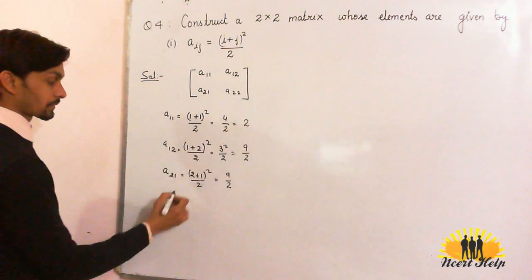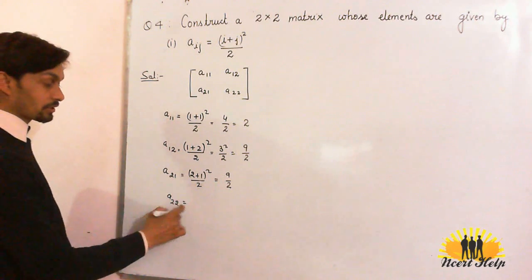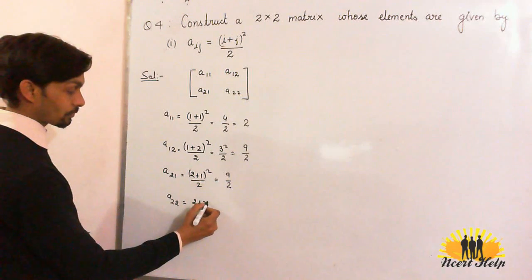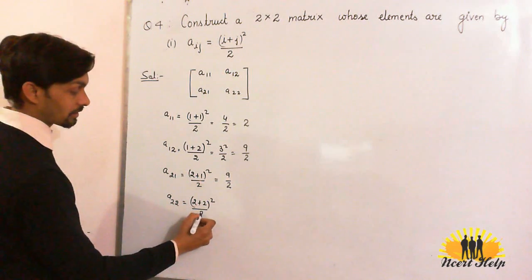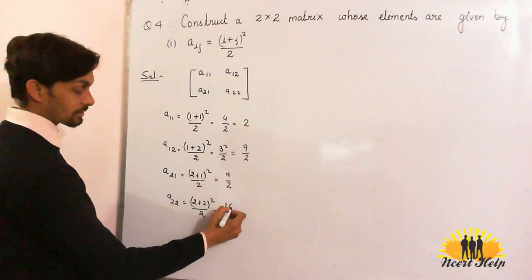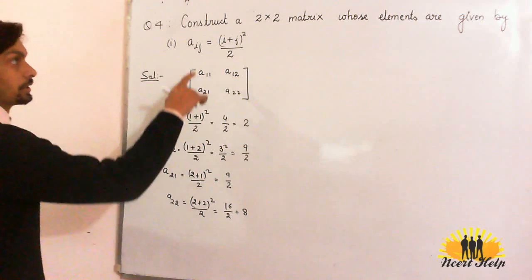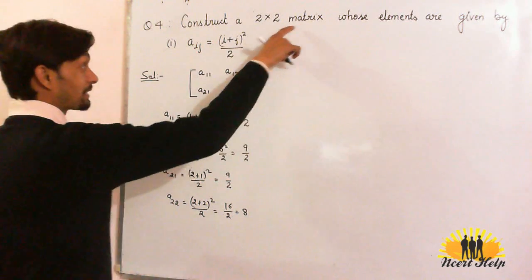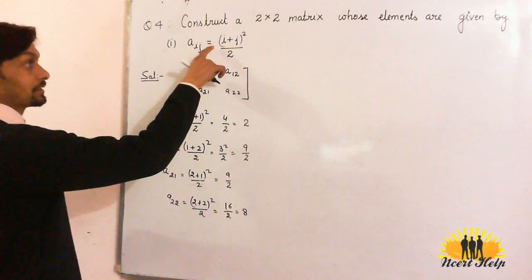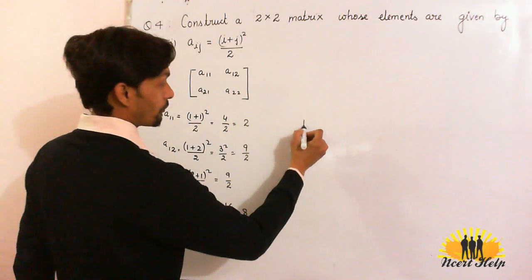Now the last element of the matrix is A22. Here i is 2 and j is 2. (2+2)² divided by 2. 2+2 = 4, 4² = 16 divided by 2 = 8. So the 2×2 matrix whose element Aij is given by the formula (i+j)² divided by 2 will be...